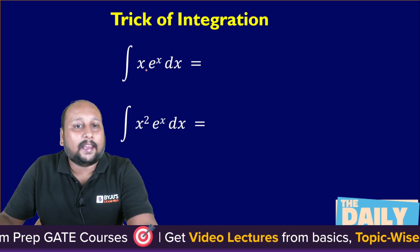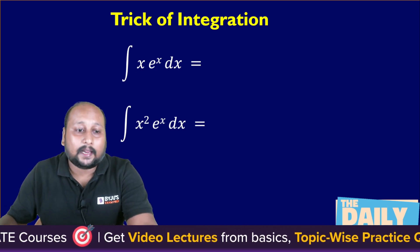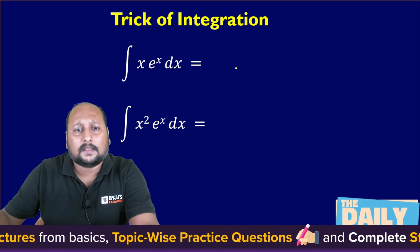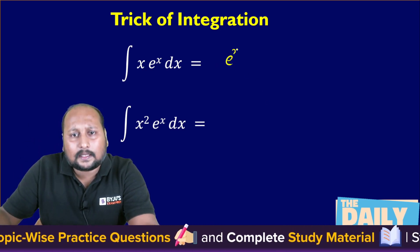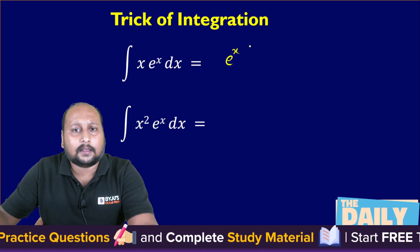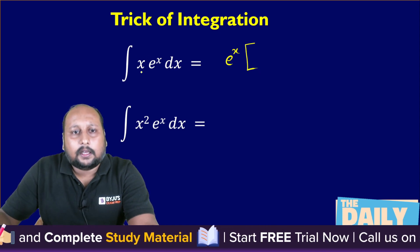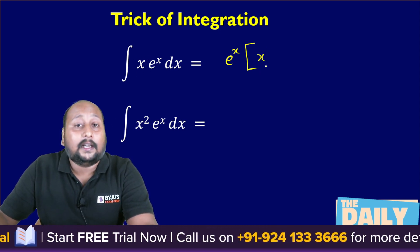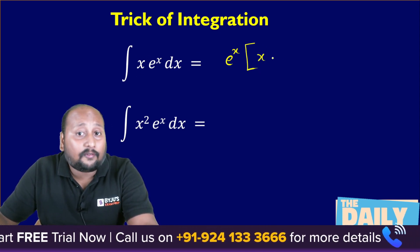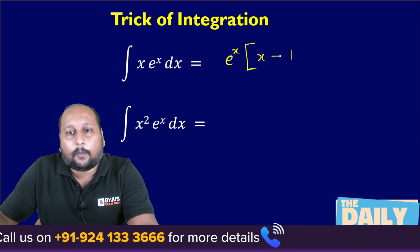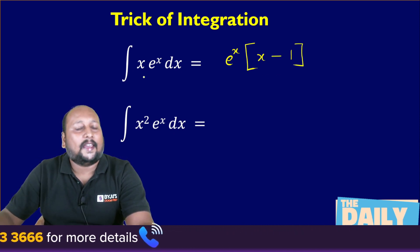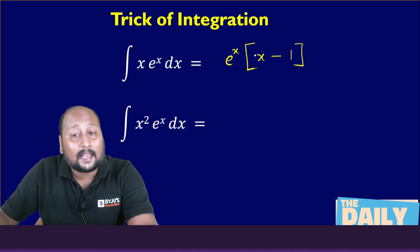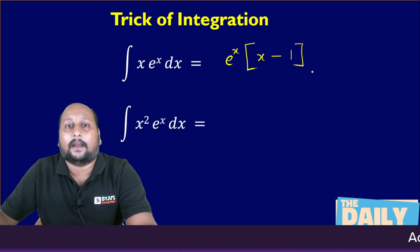Let us take one example. If I have the integration of x·eˣ dx and I want to integrate this, the simple technique is: write eˣ as it is, make a bracket, write the value of x as it is, then the differentiation of x is 1, and write the opposite sign. So the integration of x·eˣ dx is nothing but eˣ(x − 1).